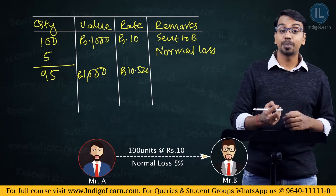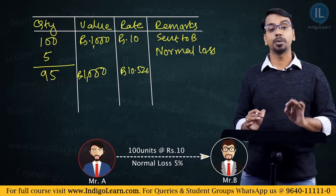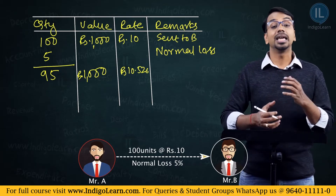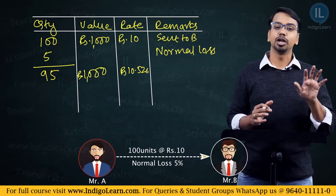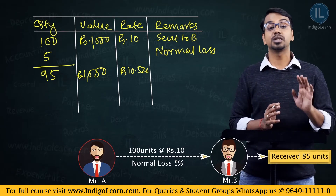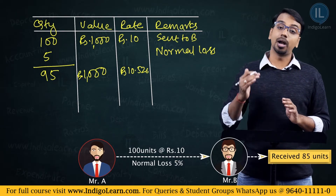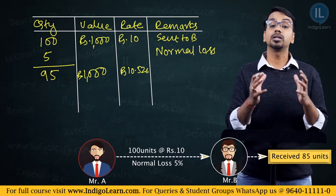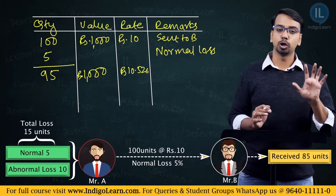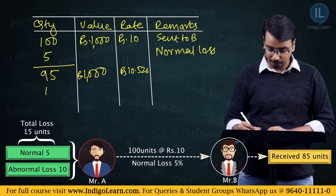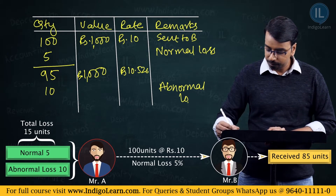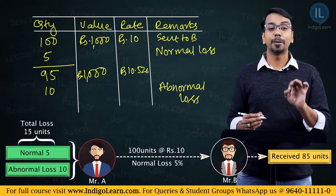Whenever there is freight incurred, that will also be loaded on the balance units. But imagine Mr. B received only 85 units. 100 units were sent, 85 units were received — the total loss is 15 units. Out of which 5 units is the normal loss, and the balance 10 units will be considered as abnormal loss.